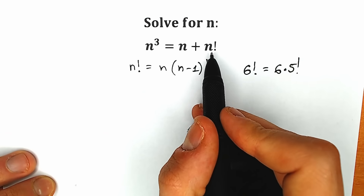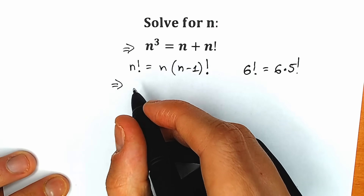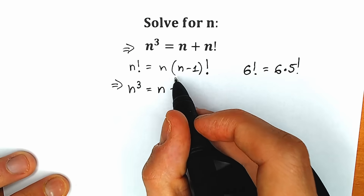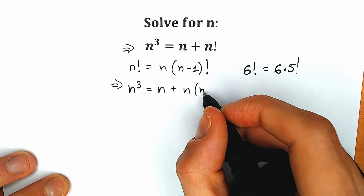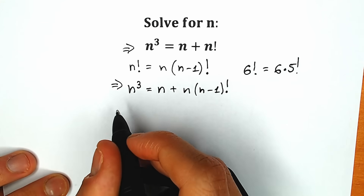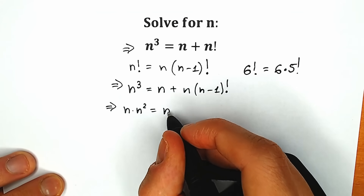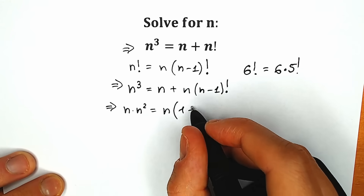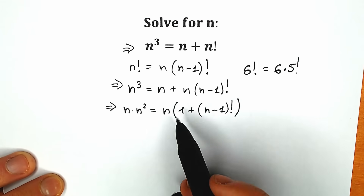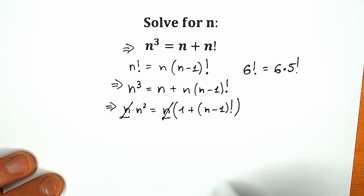Now let's replace n factorial with that expression. As a result, we have n cubed equal to n plus n times (n−1) factorial. We can factor n from the right side, writing it as n times (1 plus (n−1) factorial). Since we have n on both sides as a product, we can cancel n from both sides.